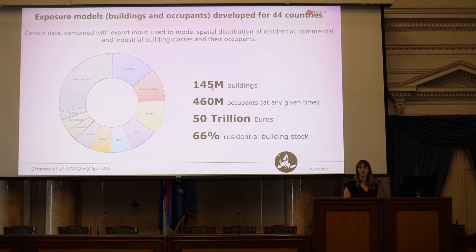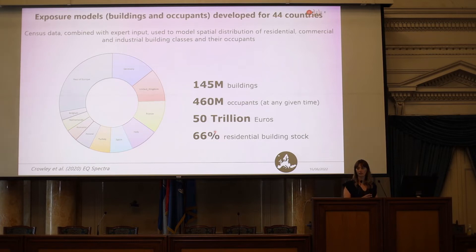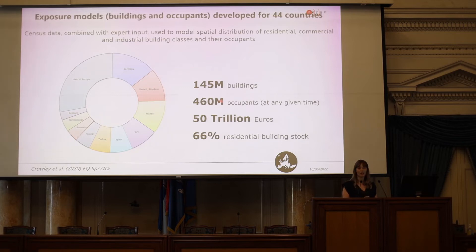At the European scale we have assessed that there are 145 million buildings — residential, commercial, and industrial — in Europe. This is probably an underestimation as we collected census data from 2011, which has since been updated. Those buildings have a replacement value of 50 trillion euros, with 66% of that value in the residential building stock. The top countries by number of buildings are Germany, United Kingdom, France, and Italy. We assess that at any given time there are almost half a billion people inside buildings across Europe.